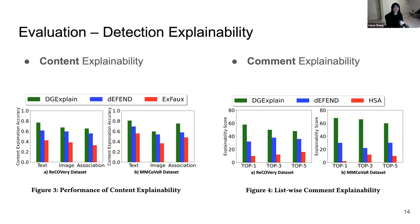We also studied the effectiveness of the detection explanation — namely, the explainability of our solution. We leveraged the crowdsourcing platform Amazon Mechanical Turk to deploy experiments for evaluating detection explainability, focusing on both content explanation and comment explanation. The results show that our DGX Plan framework achieves the best performance on both.